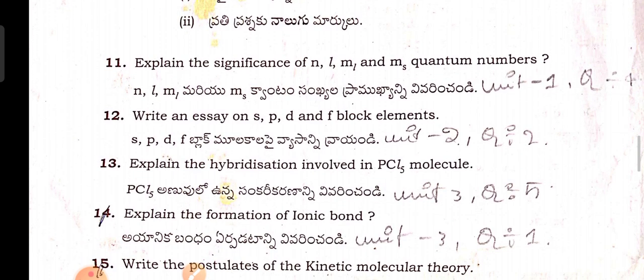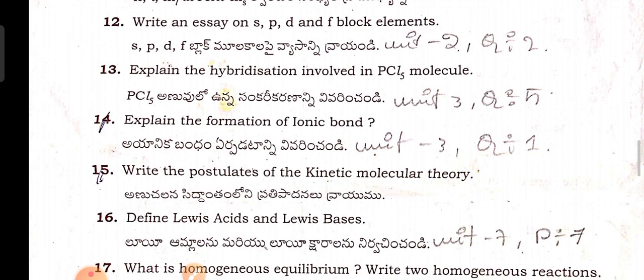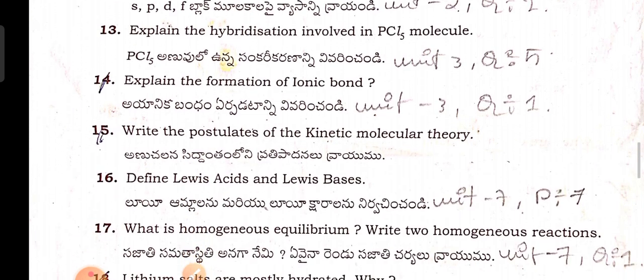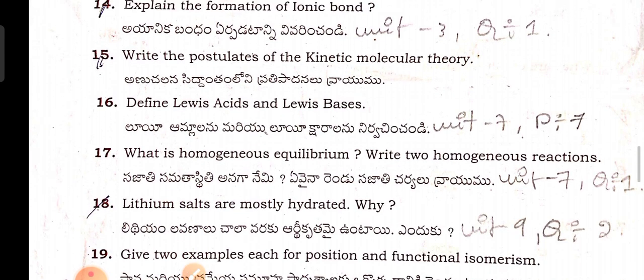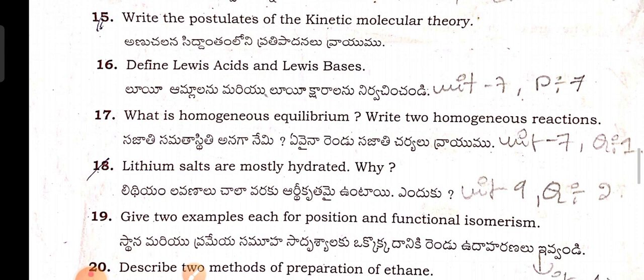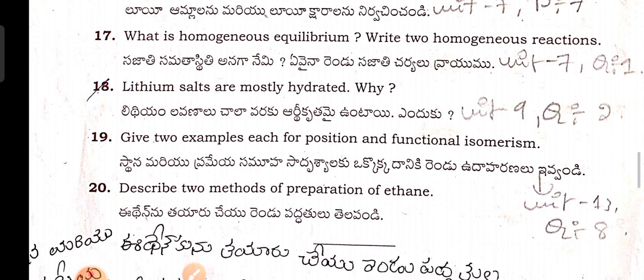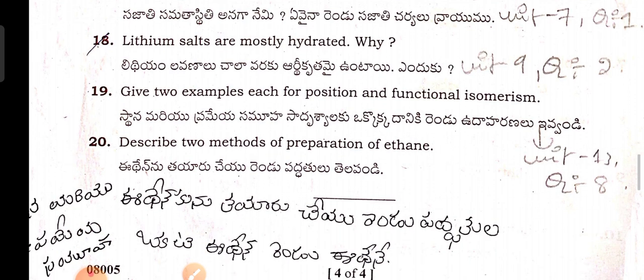Next, four-mark questions. Explain the significance of N, L, Ml, and Ms quantum numbers. Bright line spectra and s, p, d orbitals. For block elements, explain the hybridization in PCl5 molecule. Explain the formation of ionic bonds. Postulates of the kinetic molecular theory. Lewis acids and Lewis bases. Homogeneous equilibrium — give two examples of homogeneous reactions. Lithium salts are mostly hydrated — give two examples each for positional and functional isomerism. Destructive methods of depression in freezing point.